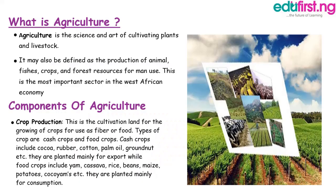What is agriculture? Agriculture is the science or act of cultivating plants and livestock. It may also be defined as the production of animal, fish, crops, and forest resources for man's use. It is the most important sector in the West African economy.